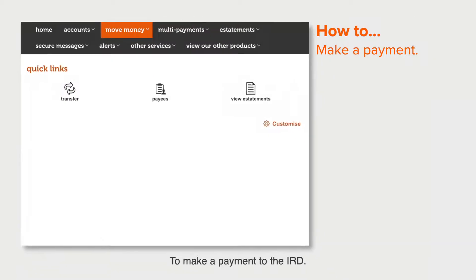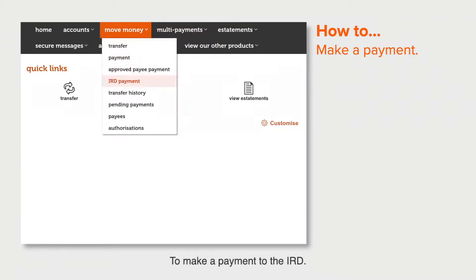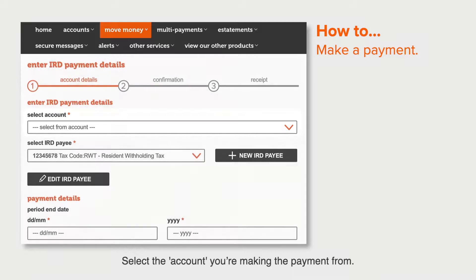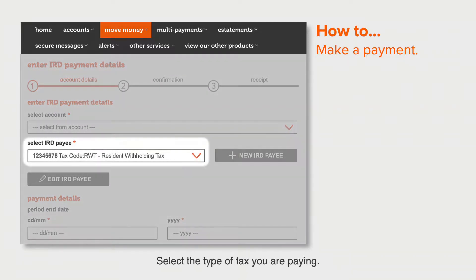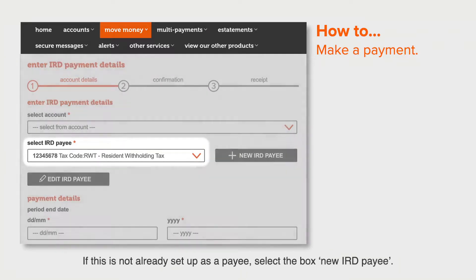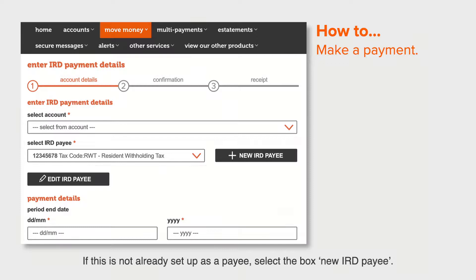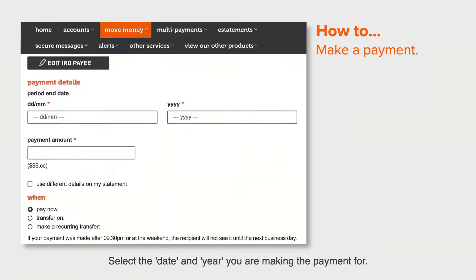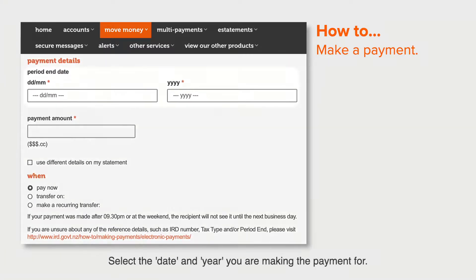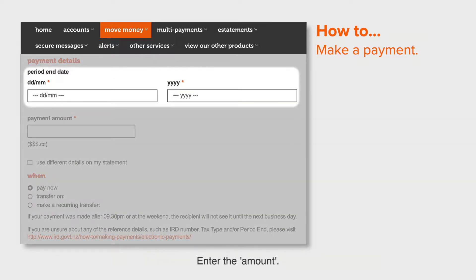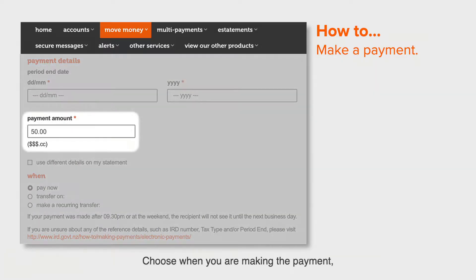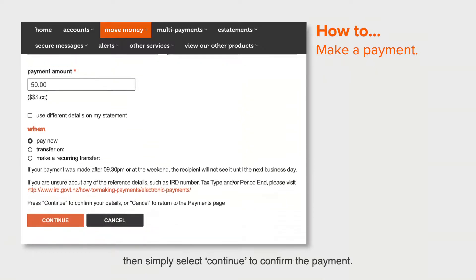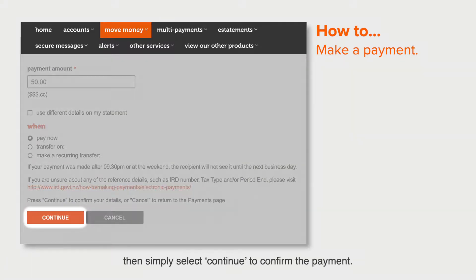To make a payment to the IRD: select the account you are making the payment from, then select the type of tax you are paying. If this is not already set up as a payee, select the box New IRD Payee. Select the date and year you are making the payment for, enter the amount, choose when you are making the payment, then simply select Continue to confirm the payment.